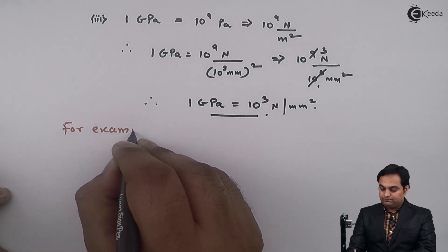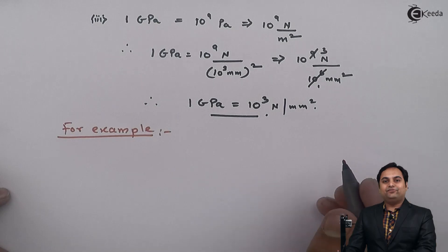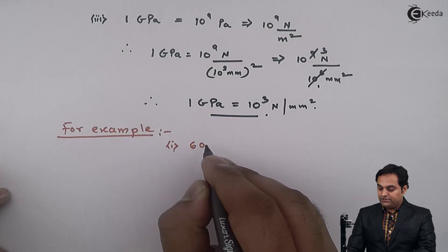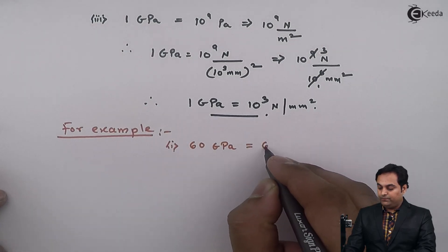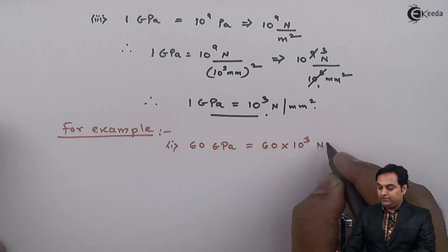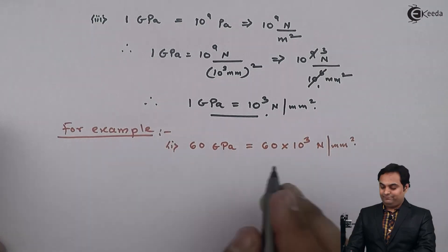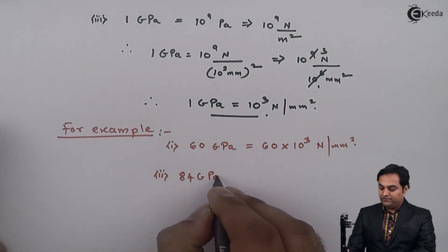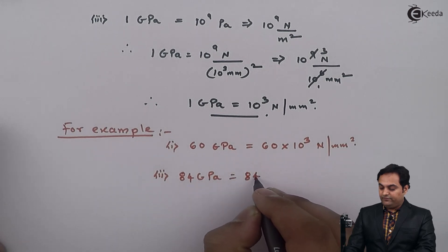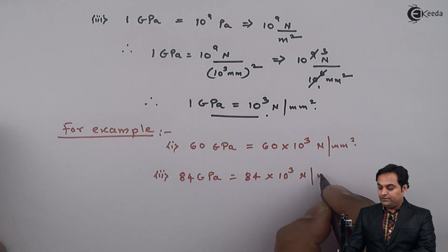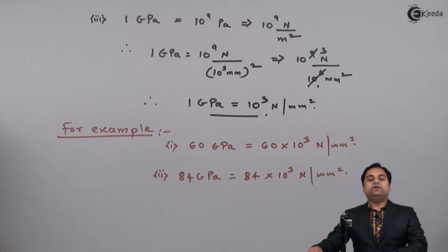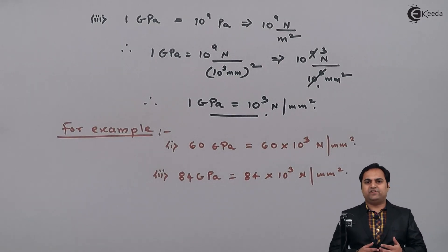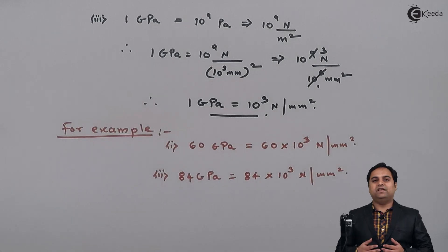For example, if stress is given as 60 giga Pascal, it equals 60 × 10 raised to 3 Newton per mm square. If it is 84 giga Pascal, then it equals 84 × 10 raised to 3 Newton per mm square. So in this video, we have seen the description, concept, and definition of stress along with its units and how to convert them.